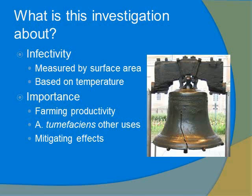What is this investigation really about? One key word I've used here is infectivity. I'm going to measure the infectivity of the bacteria based on the surface area that the bacteria's tumors affect on the plant. Additionally, the plants that I'm going to infect will be placed into different temperature-controlled environments. This is important because Agrobacterium has a large effect on farming productivity, and anything we can do to mitigate the effects of crown gall disease on plants will be of a huge benefit to the agriculture industry.